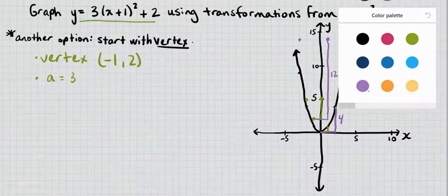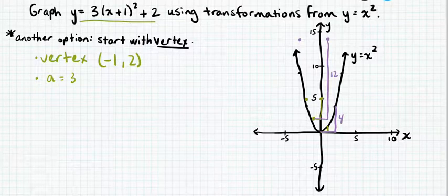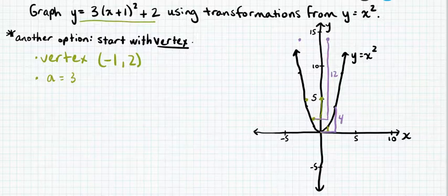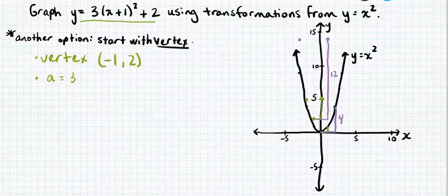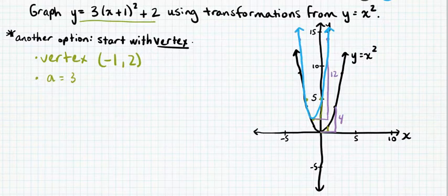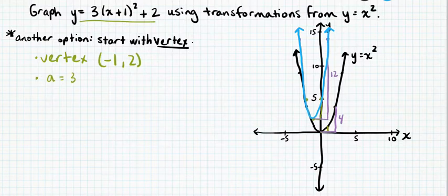We can use this spacing between points to count out where the other points on our parabola are. On the base curve from the vertex: over 1, up 1 — multiplied by a equals 3 on the transformed graph gives over 1, up 3. Over 2, up 4 on the base, multiplied by 3, gives over 2, up 12 on the new graph, starting at the vertex. Then draw a smooth blue curve through the final transformed graph. This approach could have also been done using the previous method — starting with y equals x squared and applying all transformations to each key point.